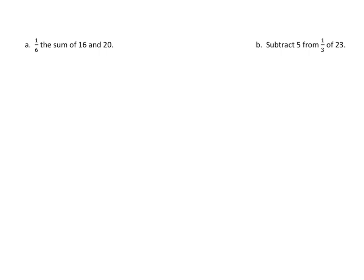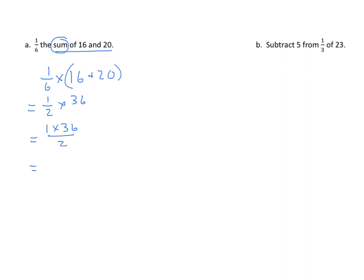Now we're going to do several of these — turning words into expressions, then solving. We have 1 sixth of the sum of 16 and 20. The sum means we add, and we do that first, so we have 1 sixth times (16 plus 20). The expression inside the parentheses gives us 36, so we have 1 sixth times 36, which equals 36 sixths, and that is 6.